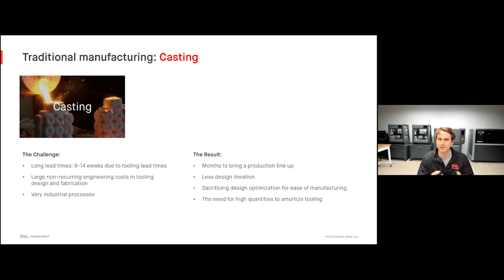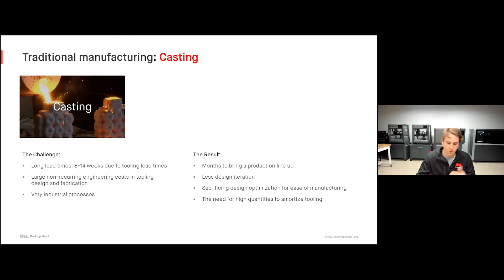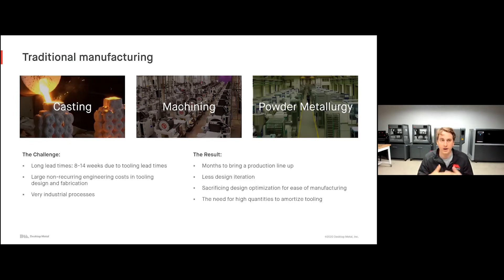Oftentimes you see people sacrificing design optimization in order to get ease of manufacturing. I commonly refer to this as bending to the will of your manufacturing method, where you're more worried about whether this is going to be cast affordably and efficiently than whether this is the optimized geometry for your application. With a lot of traditional manufacturing methods, there's this need for high quantities in order to amortize your tooling costs. These same challenges are really true for almost all traditional manufacturing methods — whether machining, powder metal, press and sinter, or MIM.